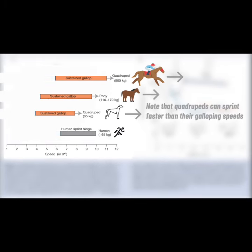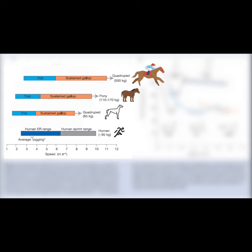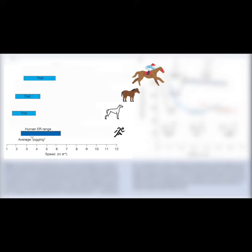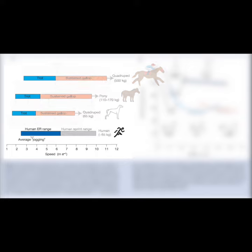They cannot gallop for more than a few miles before having to slow down to a walk or a trot, especially when it's hot. Even non-elite recreational runners can run a marathon well above the speed at which specialized quadrupeds can trot the same distance.